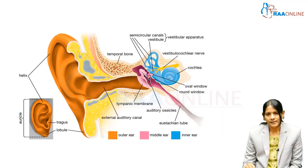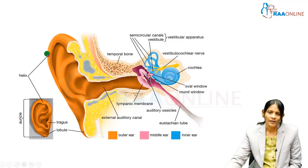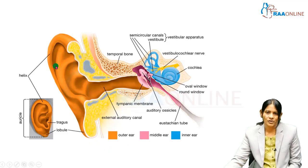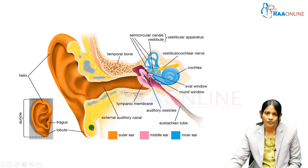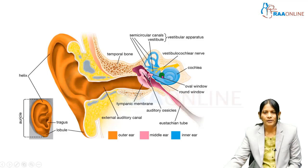Before we go into the external ear proper, it is pertinent to know the overall anatomy of the ear. The major function of the ear is to ensure that we hear properly. To take care of that function, the ear is made up of three parts: the external ear, the middle ear shown in purple, and the innermost ear shown in blue.